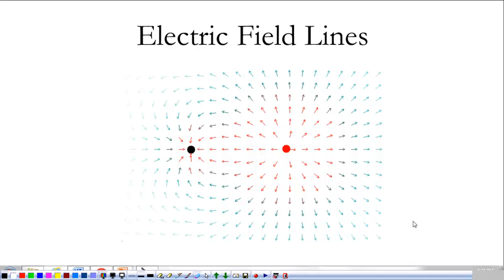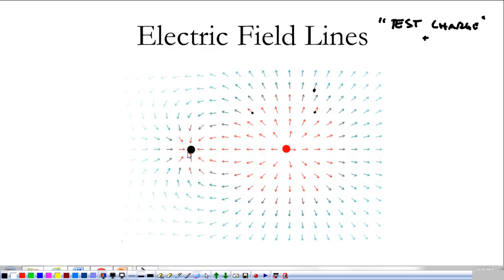The nice thing about electric fields is that they give us a visual of what's going on in space — that's why we like them. The way we do that is with electric field lines. What we've done is taken a test charge, placed it at different spots in space around two charges, and looked at the force on that test charge, drawing an arrow indicating the direction of the force. Looking at everything here, the force on my tiny positive test charge is pointing away from one charge and towards the other, meaning one is positive and the other is negative. As we draw our electric field lines, it's just following along and connecting up the dots.